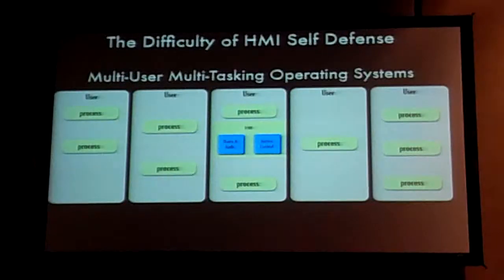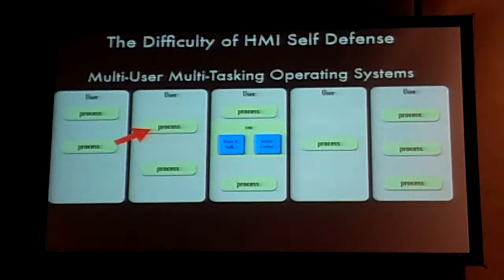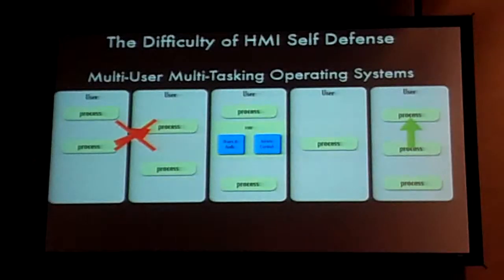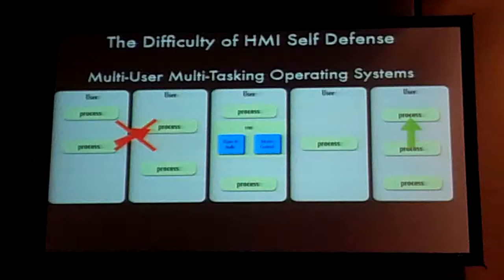If you have multi-users and multi-tasking, you've got several different users and several different processes. The operating system and the chipset and everything tries to help you out with preventing one user's process from monkeying around with another user's process. But there's nothing to keep one user's process from messing with another user's process if you're running a program as a user and you've attached to it — you can mess around with its files as long as all the ownership things are straight.